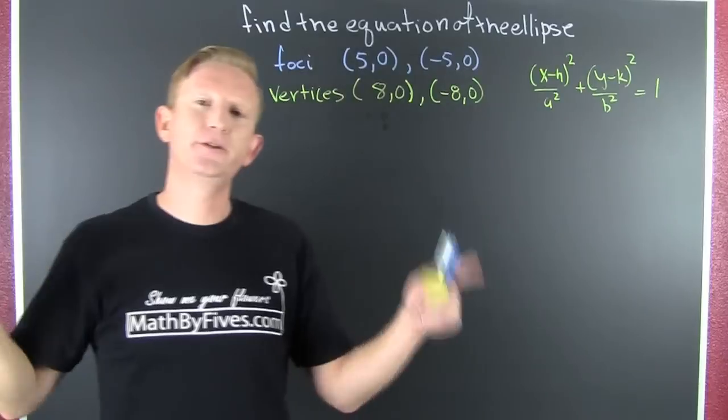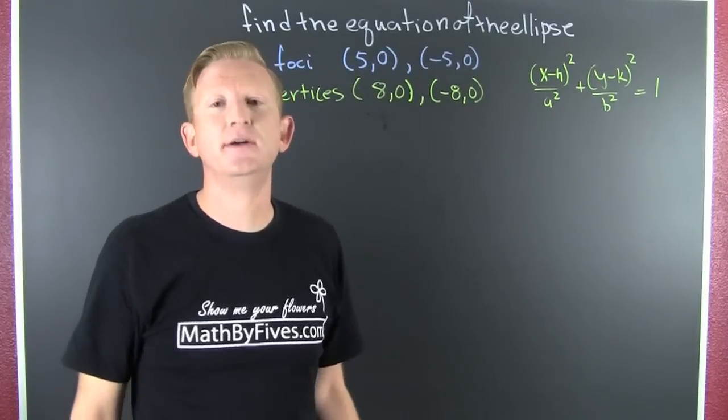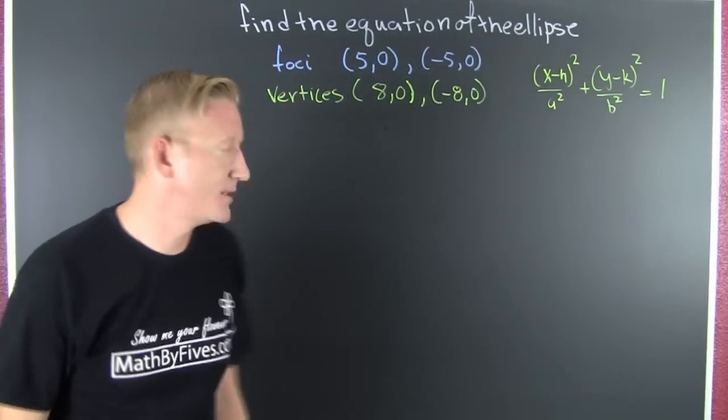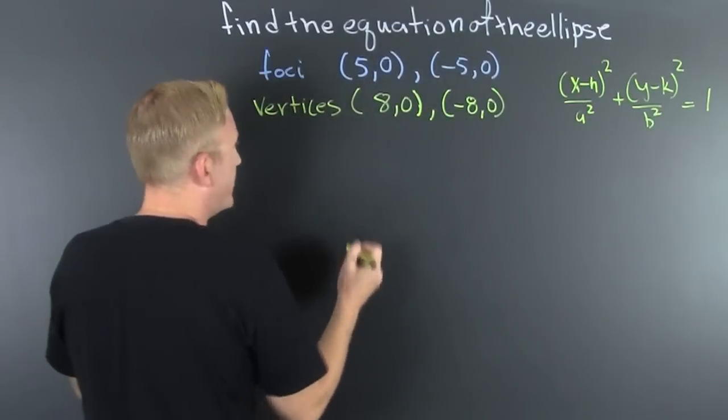So we need to find our characteristics. We need to find our A and B. So let's plot something. Let's go and let's plot the foci and the vertices.